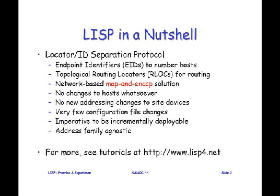We have endpoint identifiers — we call them EIDs. This is our terminology for numbering hosts; that's what you'd look up in DNS when you try to resolve a name. We have topological routing locators, RLOCs — that's what's in the core right now, and those don't change. LISP is a mapping and encap solution. If you want to have two number spaces and you only have 32 bits like IPv4, you've got to put another header on to get the other bits — that's the mapping and encap part.